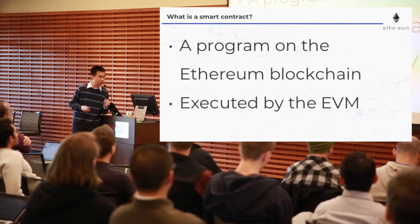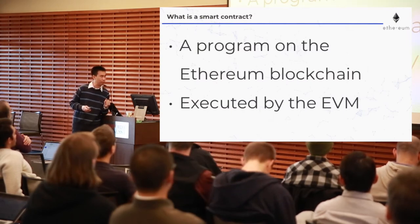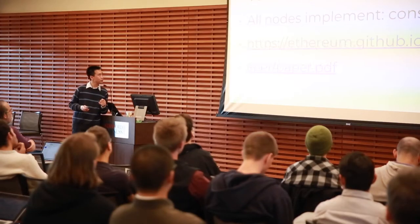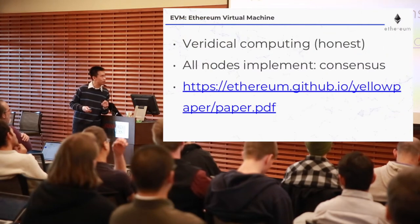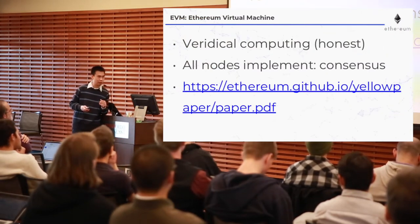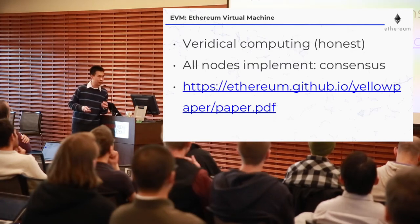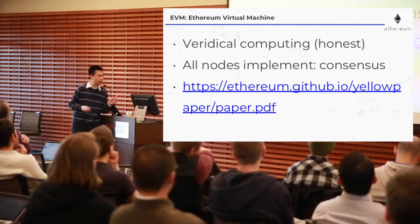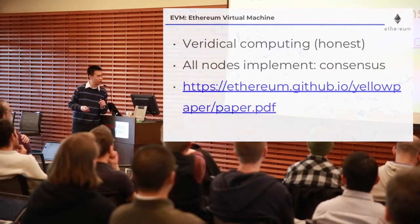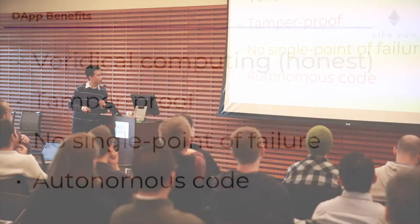What is a decentralized application? It's an application connected to the Ethereum blockchain and the peer-to-peer network, running code on the Ethereum Virtual Machine. A smart contract is a program on the Ethereum blockchain, executed by the EVM — the Ethereum Virtual Machine. What are some of the benefits? One is it's verifiable computing — honest. All nodes implement the same rules, and there's a specification called the yellow paper with precise definitions.